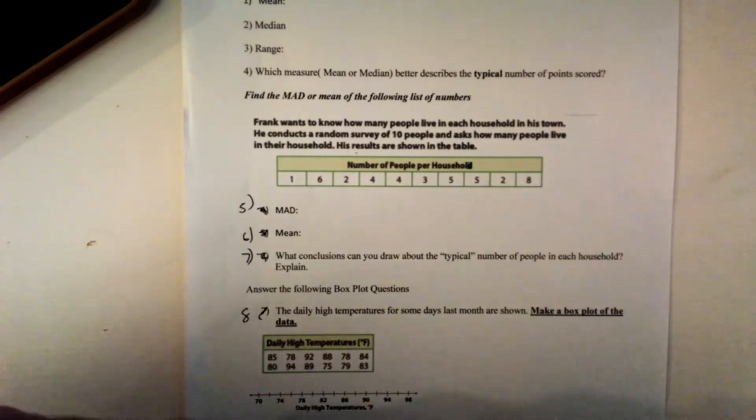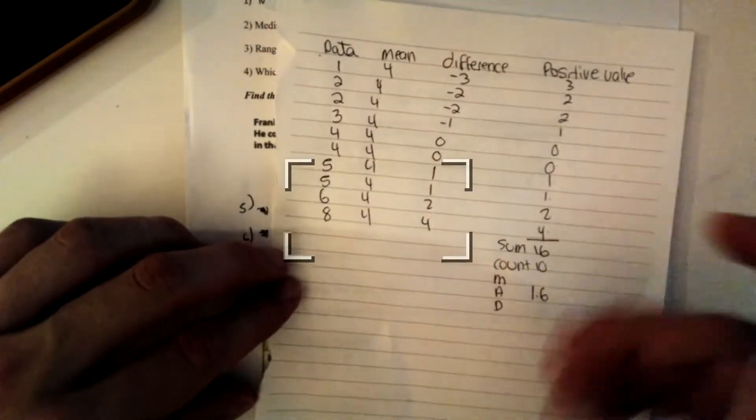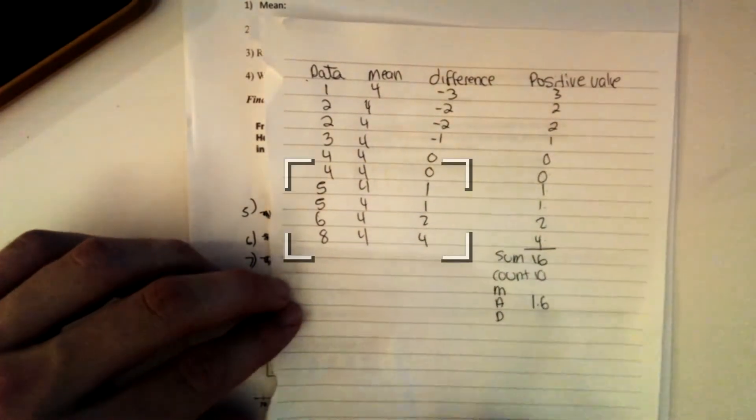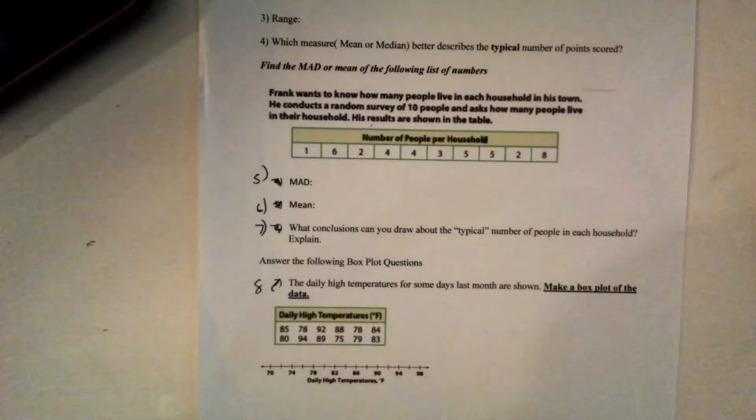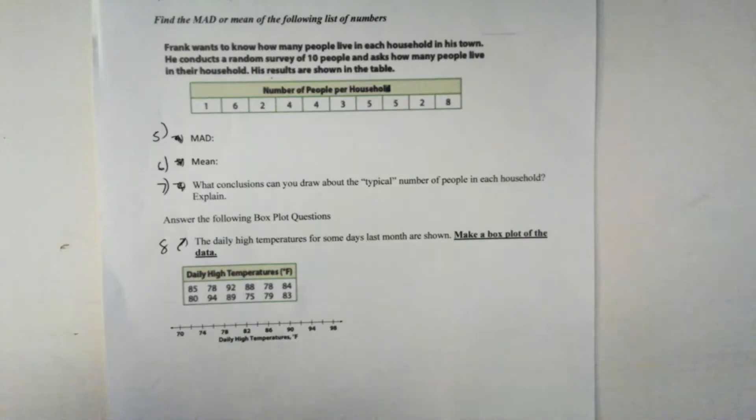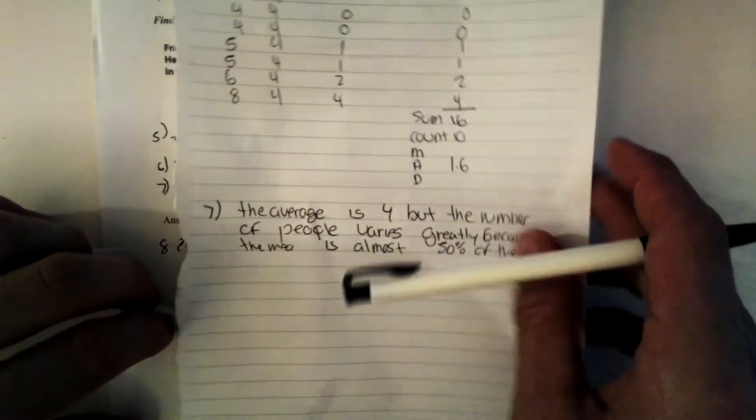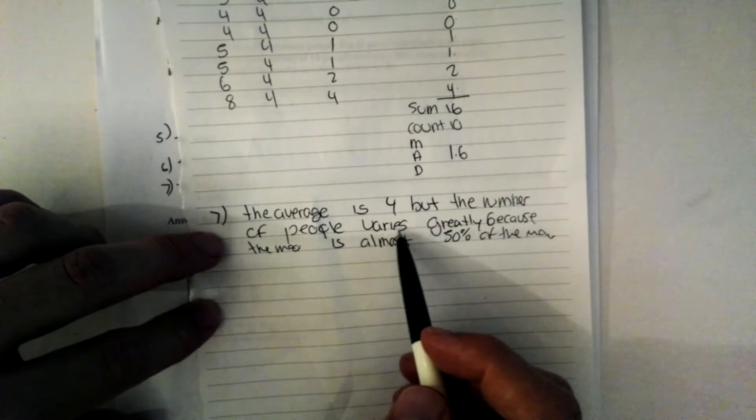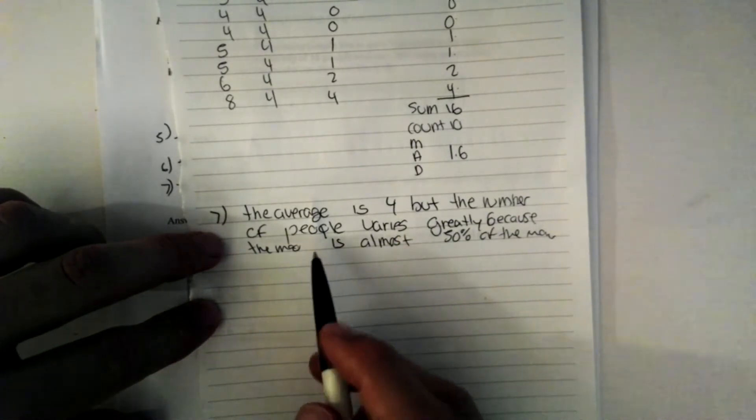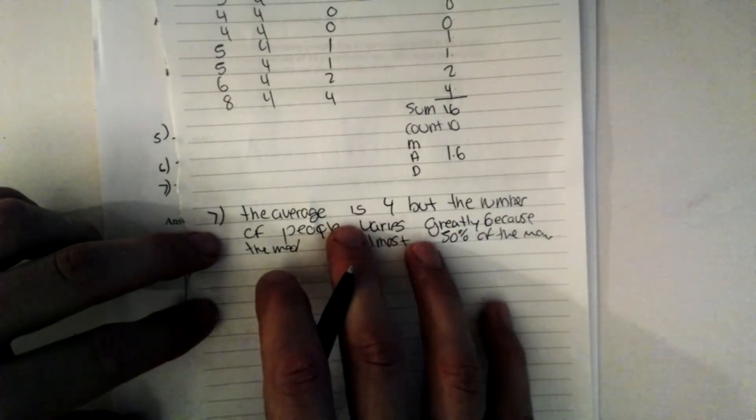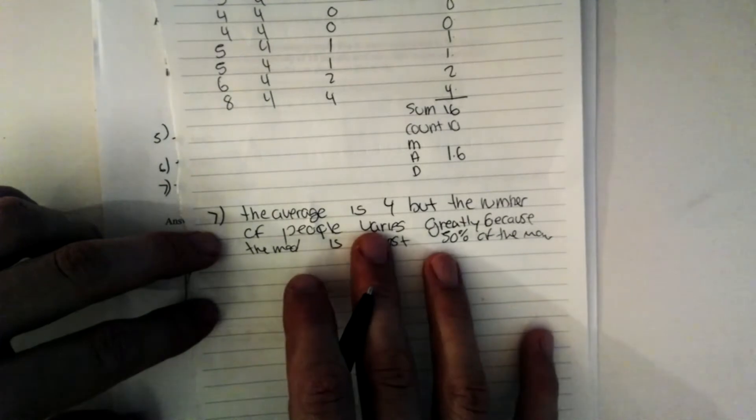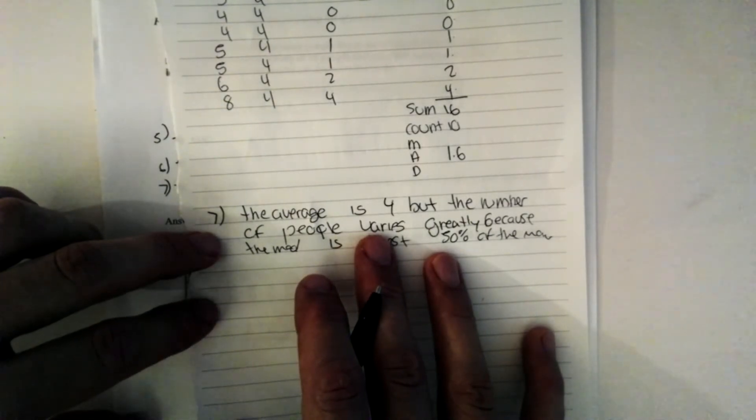Number 6 asked us to find the mean. Well, we already did that. That was 4. It says, what conclusion can you draw about the typical number of people in each household? Well, the average is 4, but the number of people varies greatly because the MAD is almost 50% of the mean. That's a significant difference. Almost half of the mean. So that's what I can conclude about the typical number of people in each household.